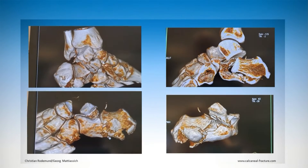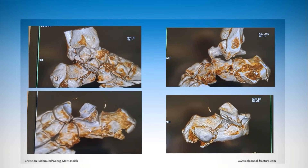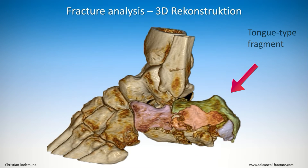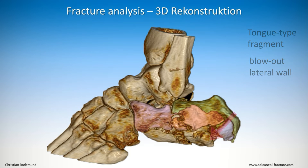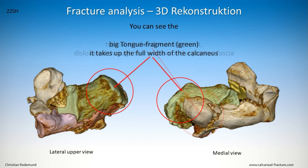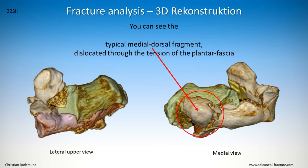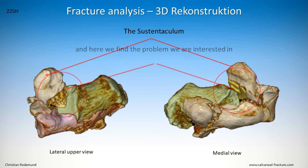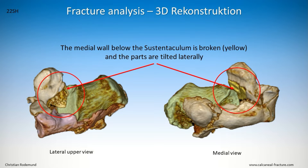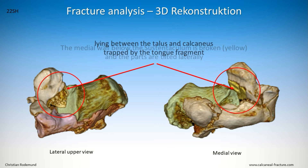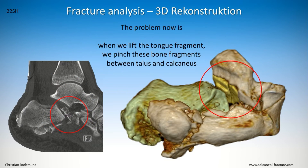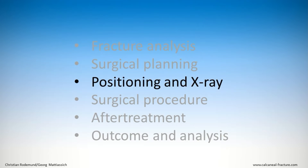With the CT slices I had difficulty classifying these parts exactly, so we did an individual 3D reconstruction and examination. You can see the tongue-type fragment, the blowout wall, and some comminution plantar. We removed the talus and examined again the large tongue-type fragment, the avulsion, and the sustentaculum. Here we found the problem: the medial wall below the sustentaculum was broken and tilted laterally, with parts lying between the tongue-type fragment and the talus. There was a danger of pinching these parts between the talus and the calcaneus by performing the Westhues maneuver.